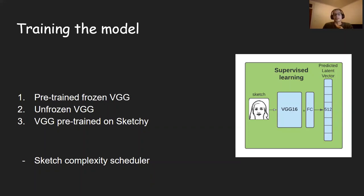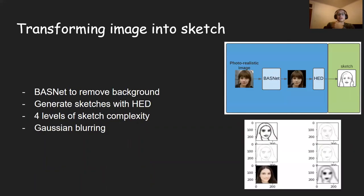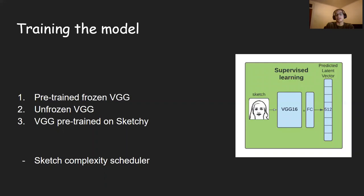We also have a sketch complexity scheduler. There are four different styles of sketches — they get simpler and simpler, removing more edges as you go down. Taking inspiration from SketchGAN, you start training with a clearer, more detailed sketch and train your way down to simpler sketches. We have a weighting system where the probability of a more complicated sketch being picked is higher at the beginning and lower at the end.